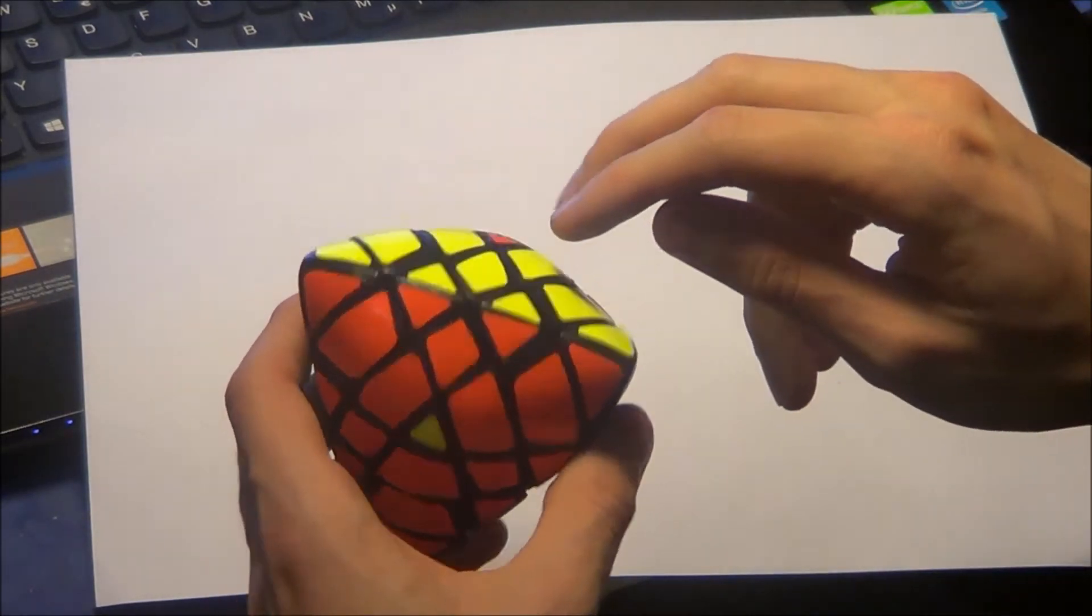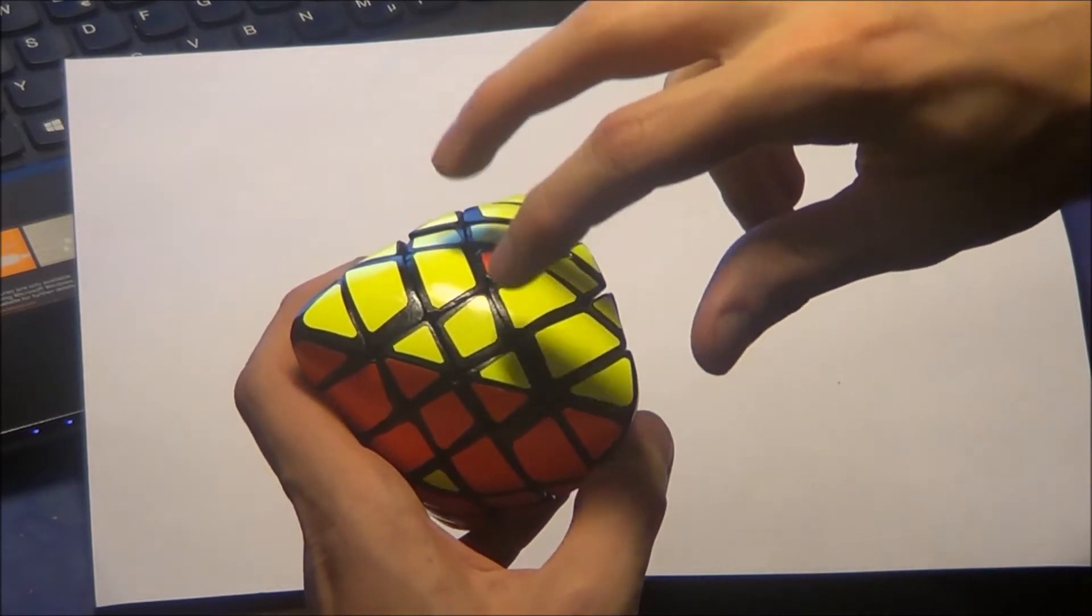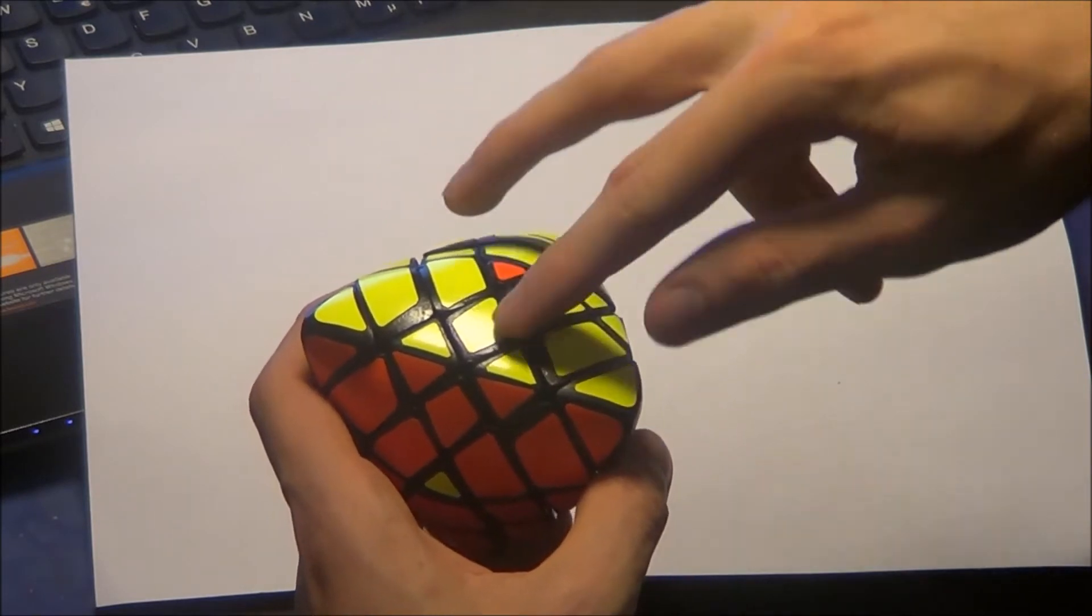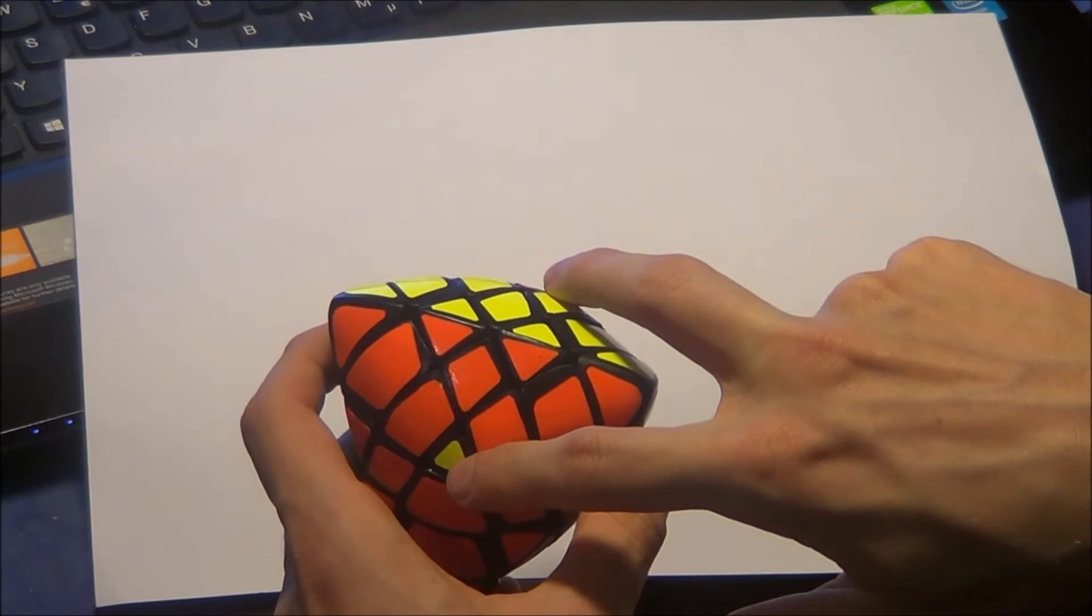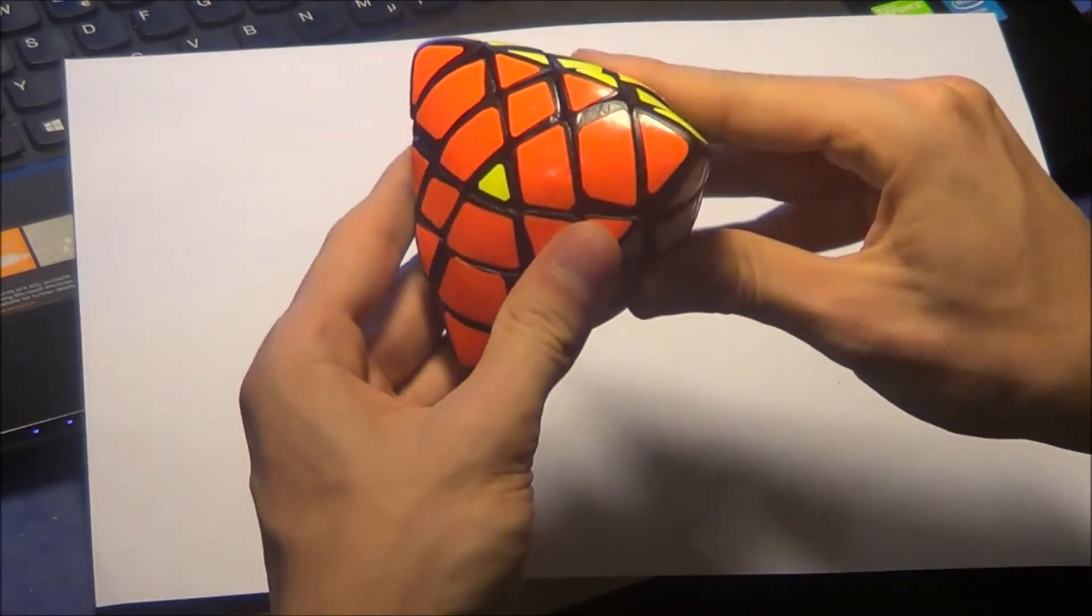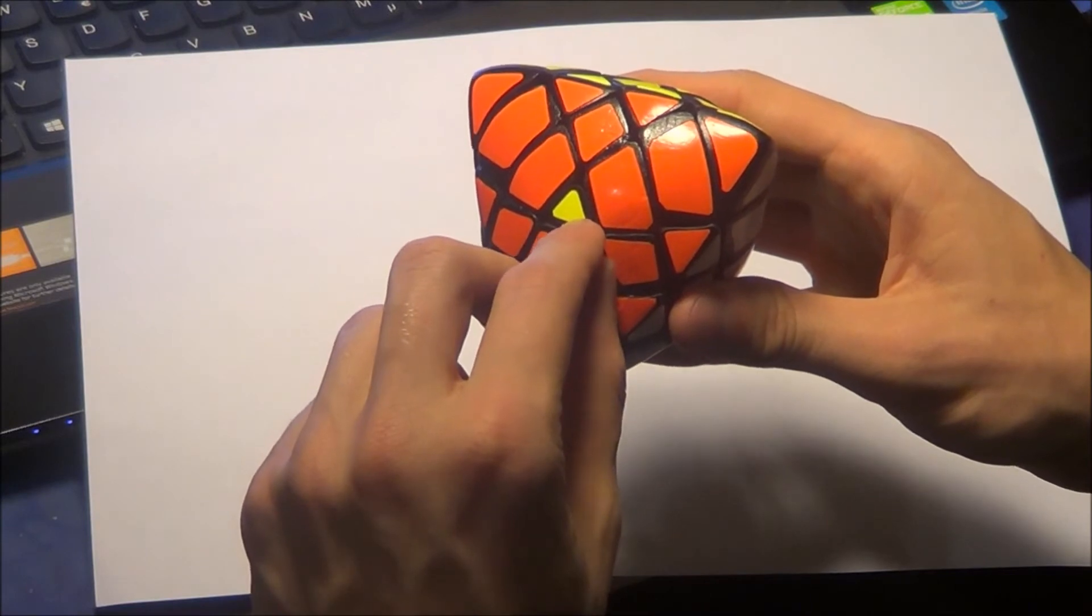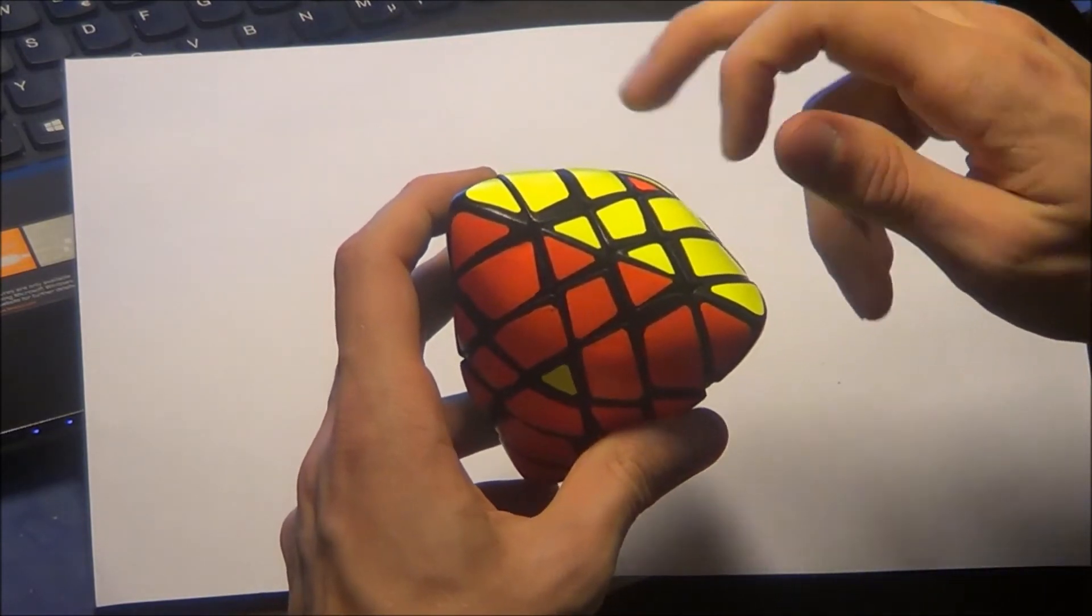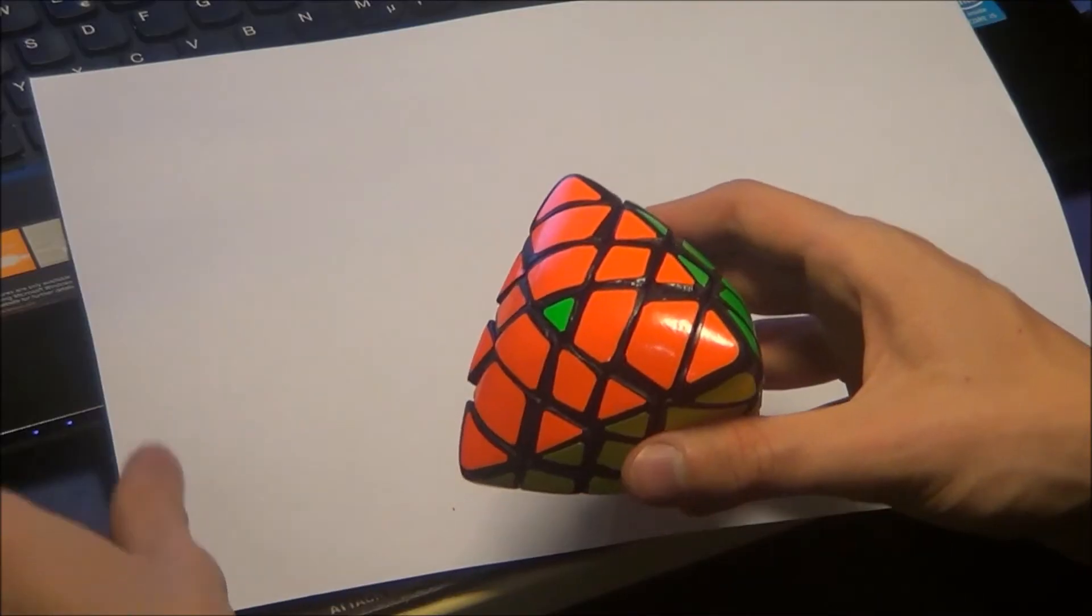The important thing is also that these two centers here have the center pieces with the same color, yellow and yellow, because we are switching these two center pieces here and also these two corners here. Okay, so you hold the puzzle like this: one corner here on the front left, one on the back right, and these two centers here in the same color.